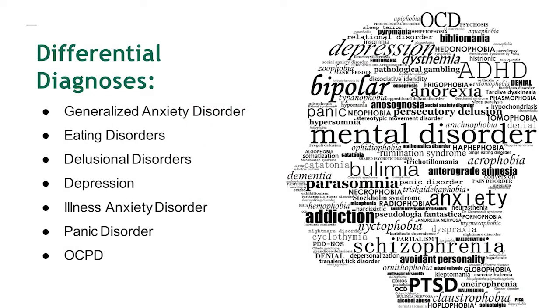Some differential diagnoses to consider when meeting with people — because OCD can look like a lot of things. Generalized anxiety disorder has anxiety about many different areas, while OCD tends to land on a couple of core themes or worries. Another key difference is that generalized anxiety often responds to logic — enough information and reassurance brings anxiety down. With OCD, it doesn't work that way; no amount of information is ever going to solve it.